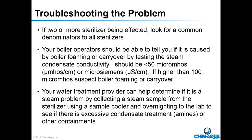If two or more sterilizers are affected, we're going to look for common denominators — what could possibly affect all sterilizers at this facility? Everybody's going to look for steam first. The boiler operator can tell central sterile or the engineering department where they stand on steam quality. They should run a daily test on the condensate, and it should be less than 50 micromhos or 50 microsiemens.